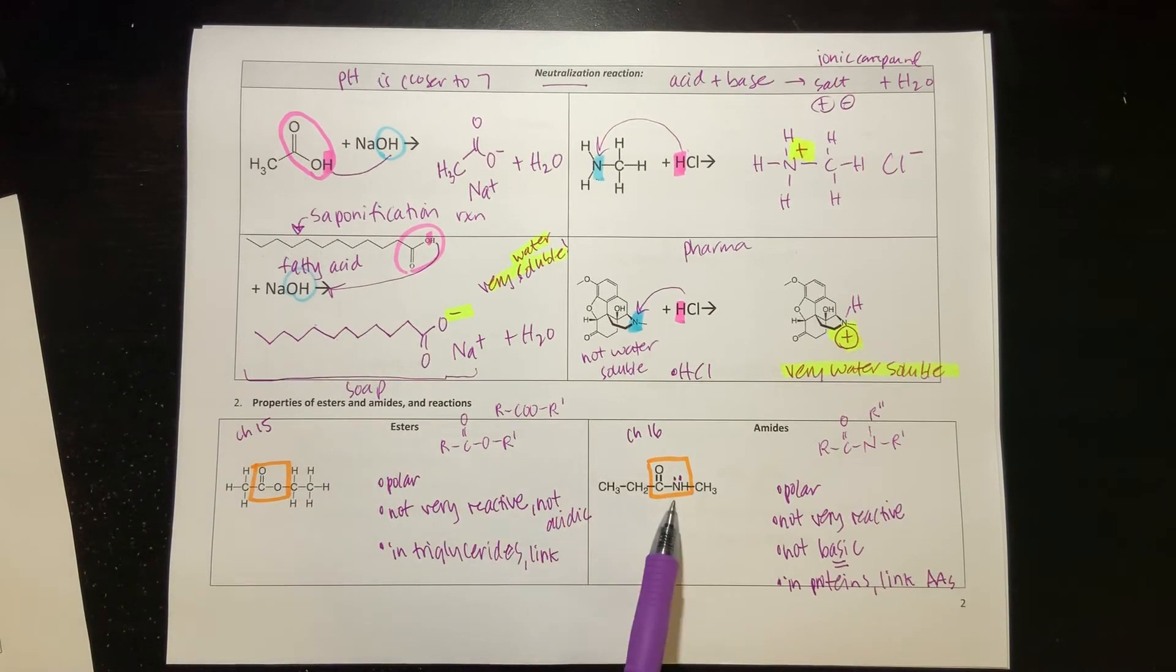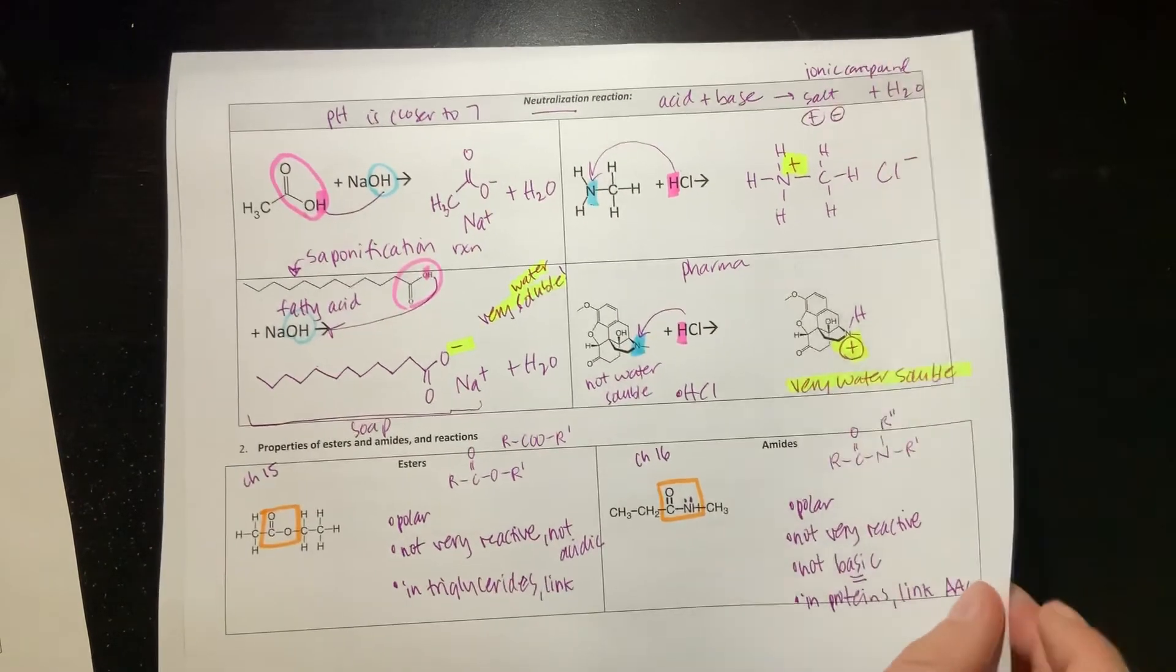This is how we link our amino acids together, with amides. With both of these, you want to be able to spot them. We'll see in a minute how they're formed, and then most importantly we're going to want to break them because we want to break down our triglycerides and we want to break down our proteins.